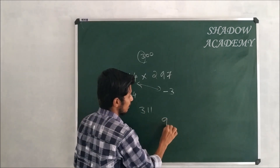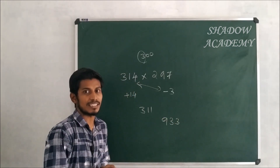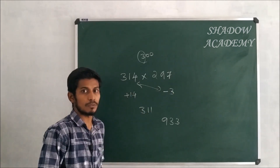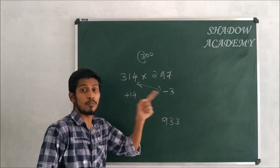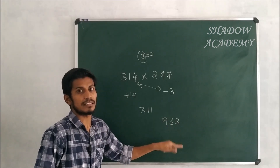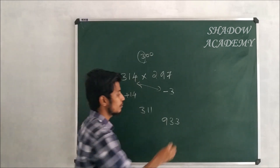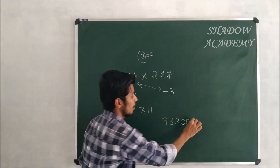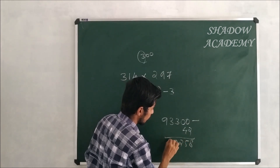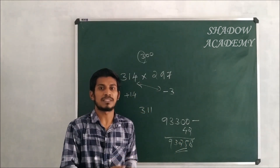We add 933, and then 14 × (minus 3) = minus 42. So 93300 minus 42 = 93258. The answer for 314 × 297 is 93,258.